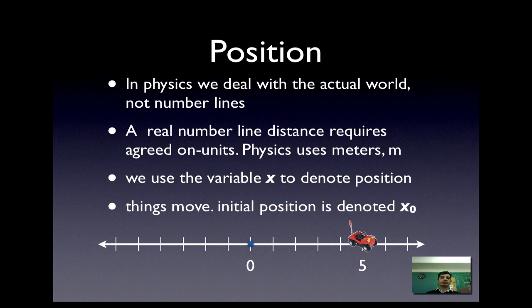In physics we deal with the actual world, and what that means is we can't just deal with number lines. When you're dealing in real life with position, you're measuring from some origin. So when I say where are you, you can't just say I'm 5. You need a unit, and in physics we use meters, which is about 3.28 feet. All positions are measured in meters or fractions of a meter. We use the letter x to denote position, and things always move. Initial position is denoted with the letter x with a little subscript 0, and we call that x-naught.